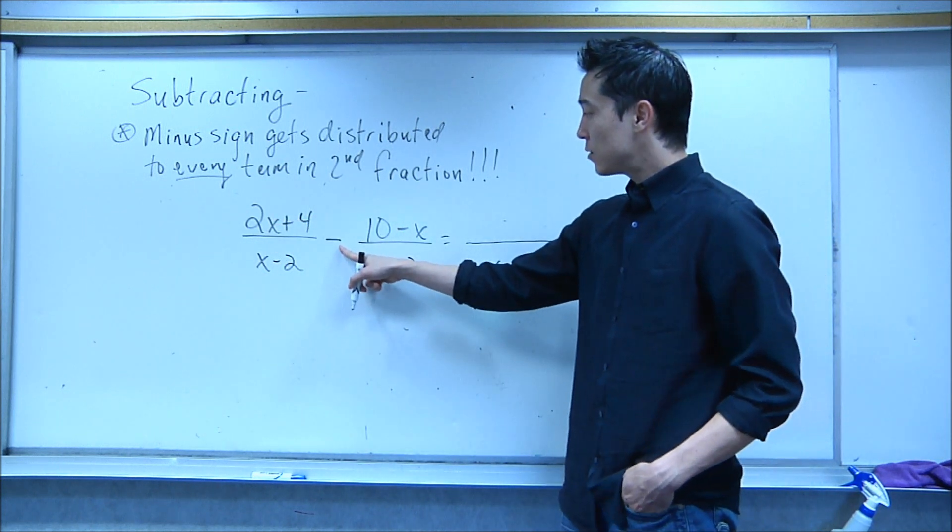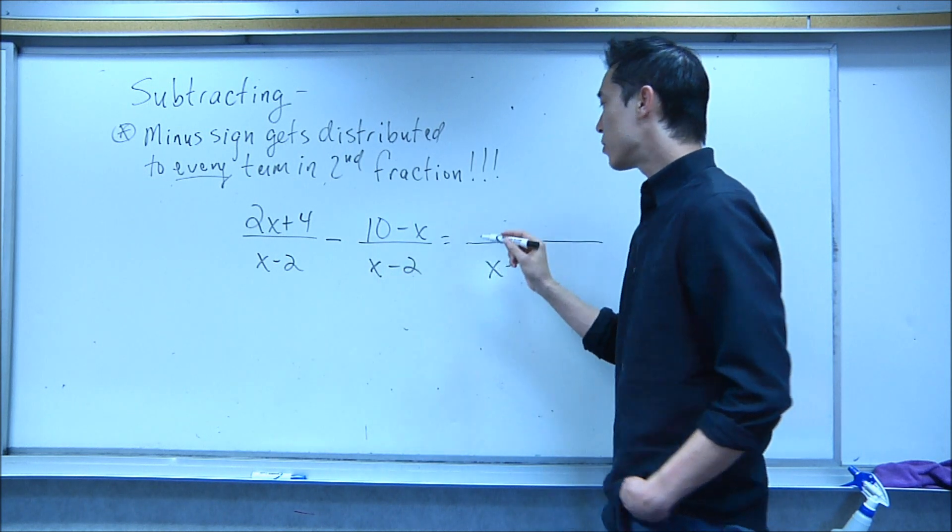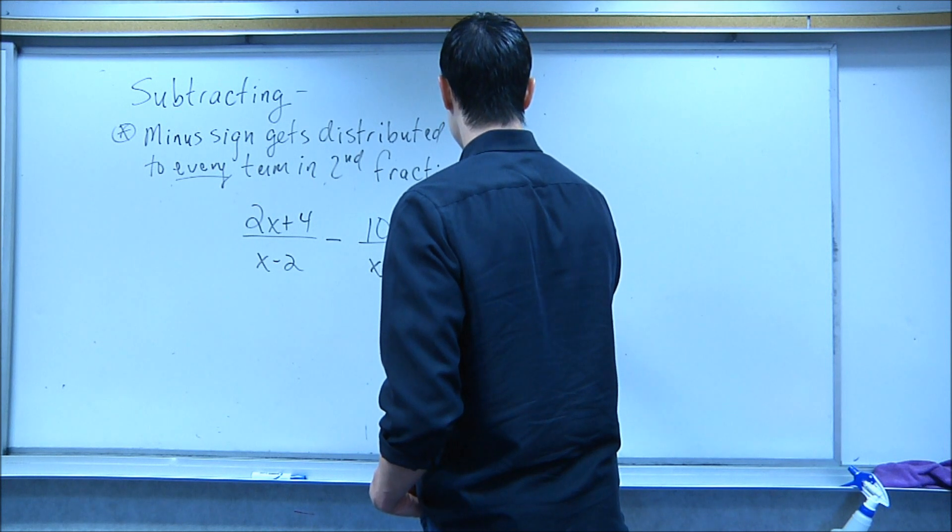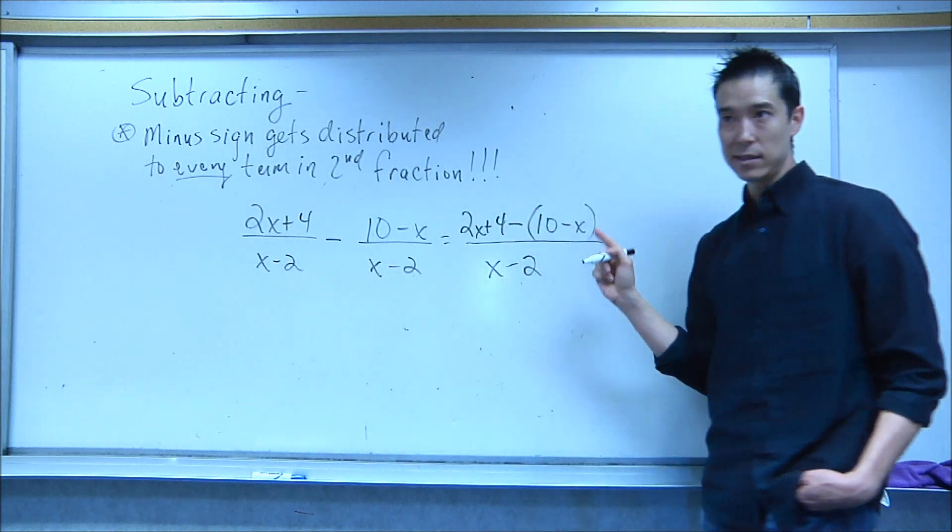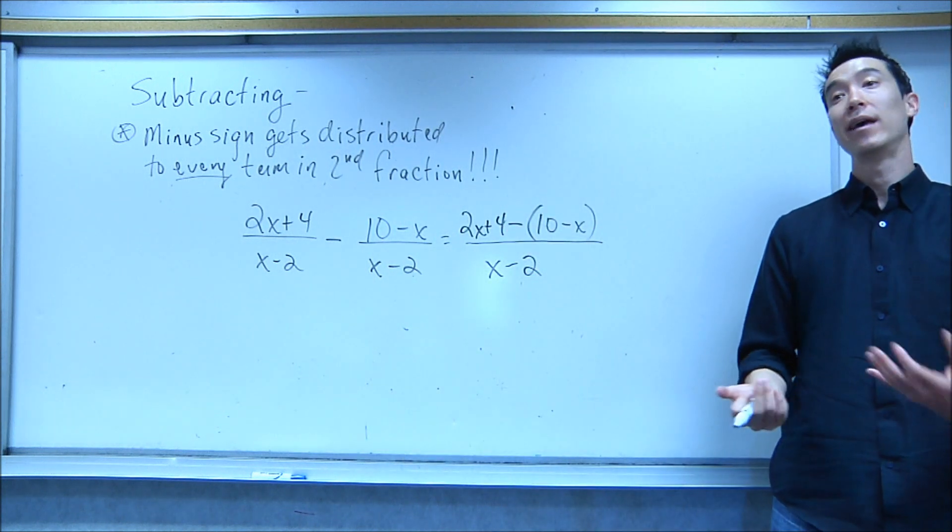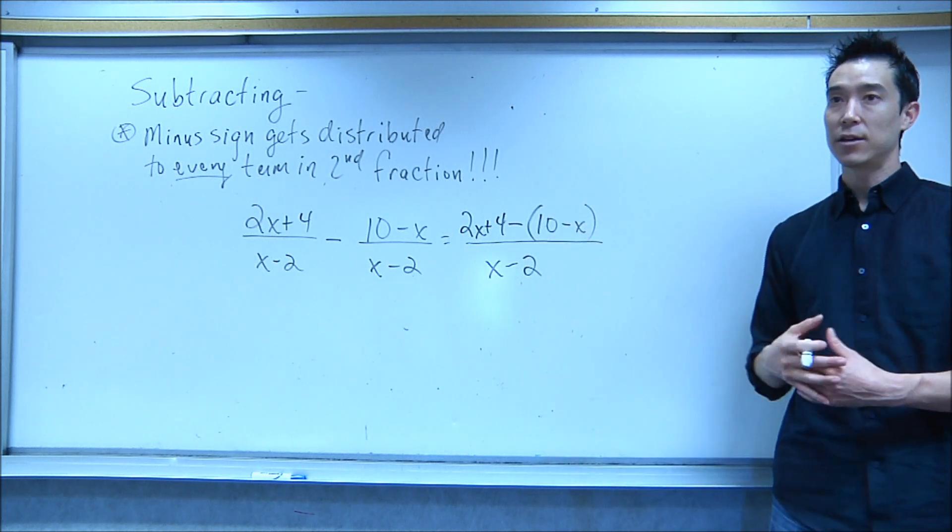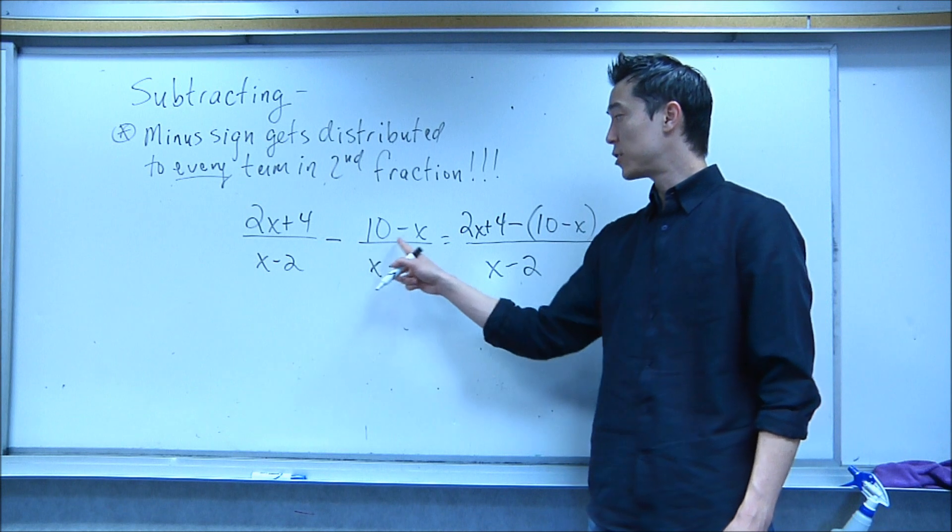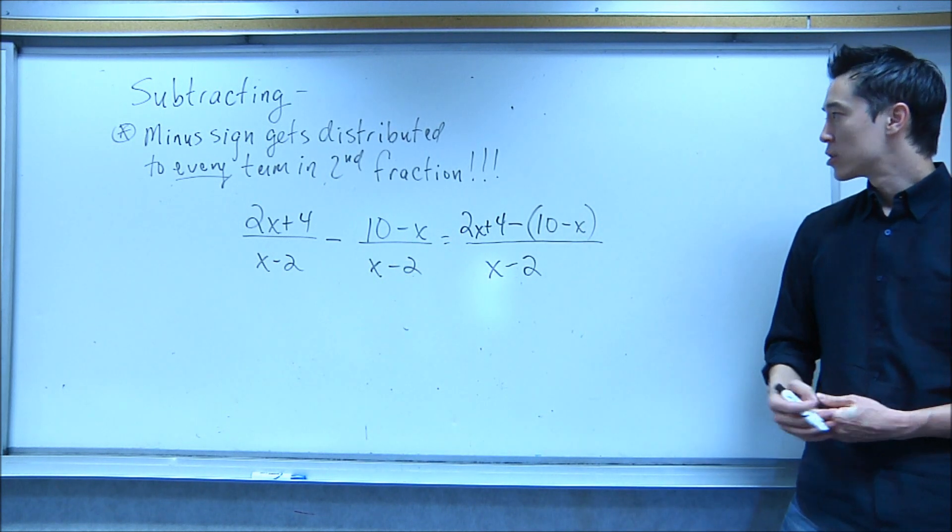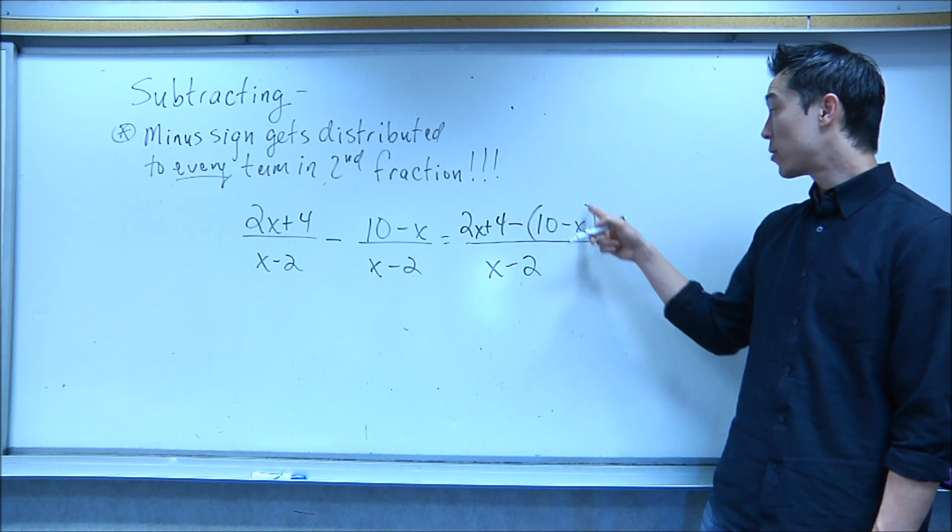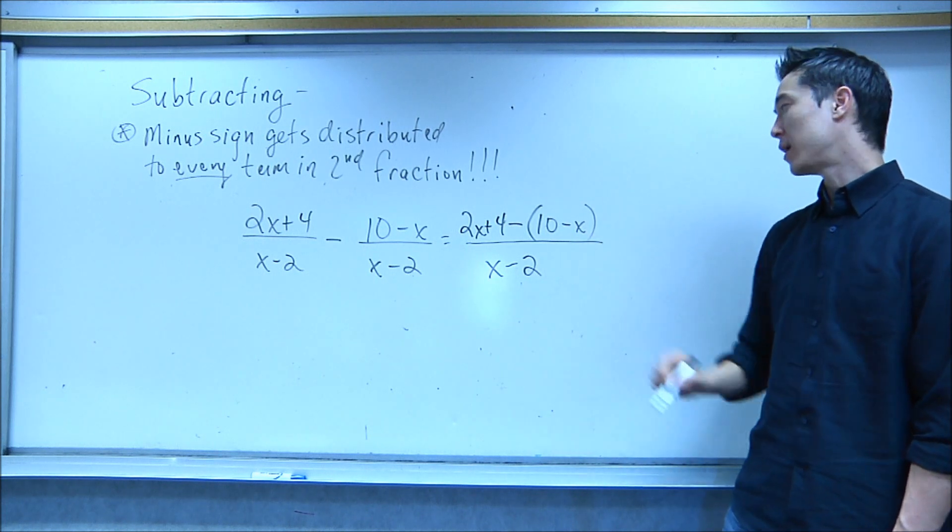Now the biggest thing that students make a mistake is this minus sign goes with both of these terms. So the best way to handle this, guys, is to just put 2x plus 4 minus, and then just make sure to put that 10 minus x in parentheses as a reminder to you, hey, I have to make sure this minus sign distributes with both of those. If you don't put that parentheses around there, you're going to forget that that minus is going to change this minus into a plus, and then you'll have a mistake. So I'm just basically begging you to make sure to put a parentheses around the second set of terms to indicate that you have to distribute that minus sign.